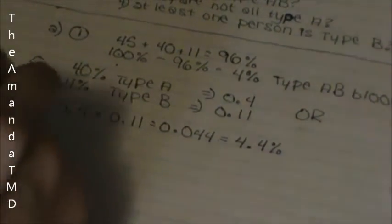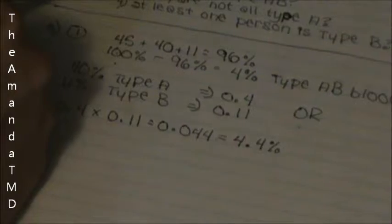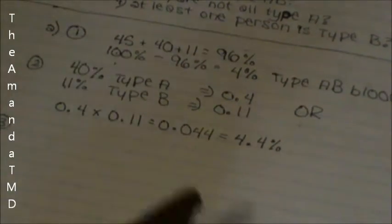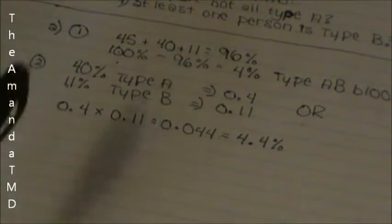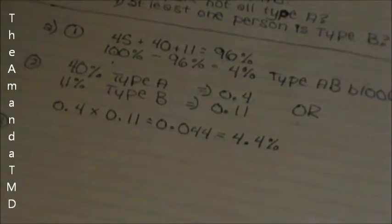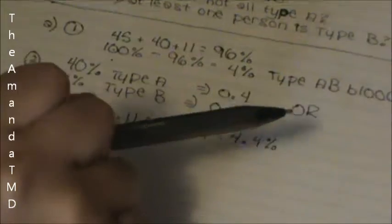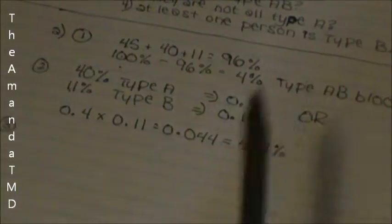Now part 3 asks, what is the probability that the donor is not a type O? You know that 45% is a type O. This one will also be a simple subtraction.